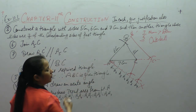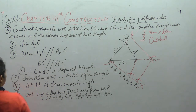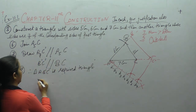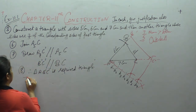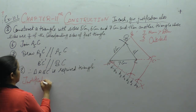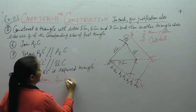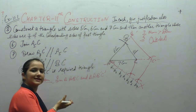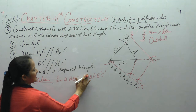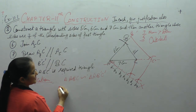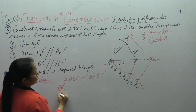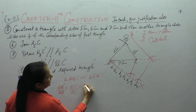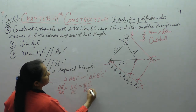जो हमें triangle चाहिए थी वो हमने draw कर दी। अब हम justification करेंगे कि जो हमने draw किया है वो कैसे आएगा। In triangle ABC and triangle AB'C', since these triangles are similar, corresponding sides की ratio equal होगी: AB'/AB = AC'/AC = B'C'/BC.